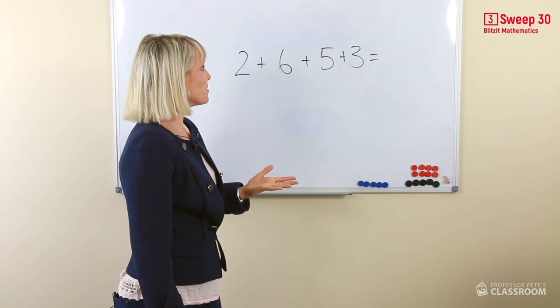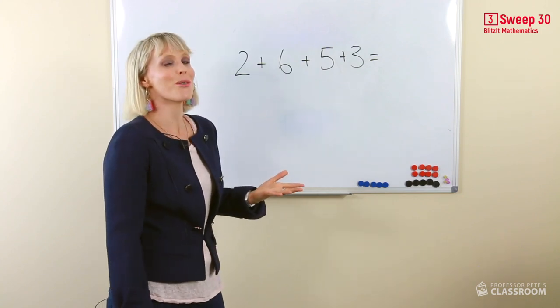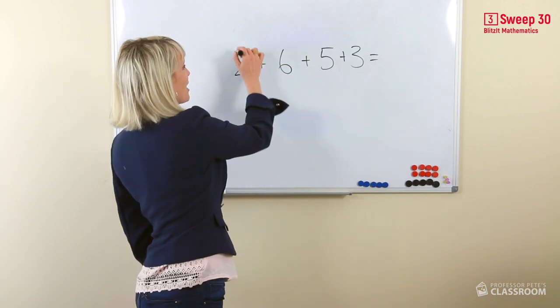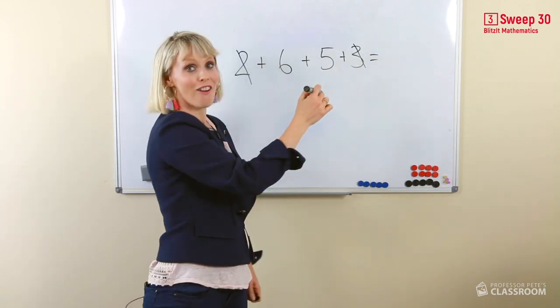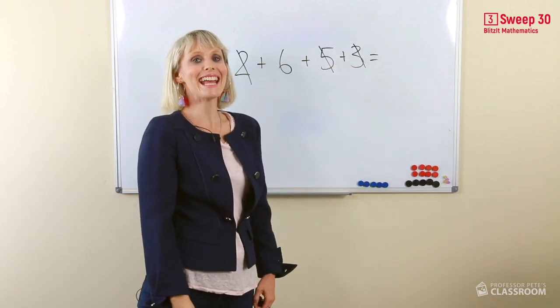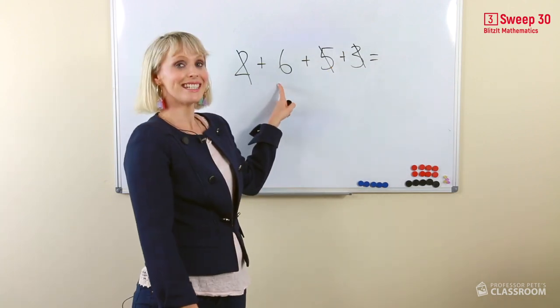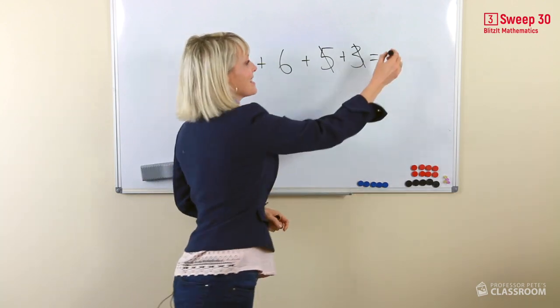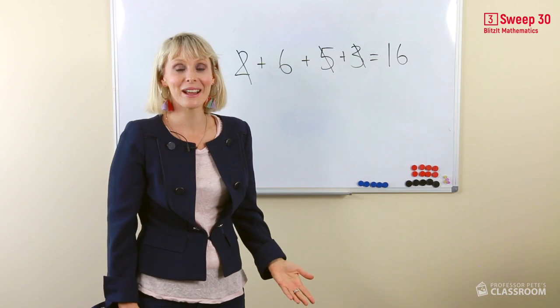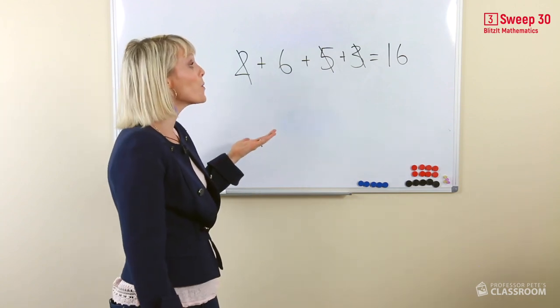Oh, but I can see 3 numbers added together that equals a 10. We know that 2 and 3 is 5. 5 and 5 equals 10. 10 and 6 equals 16. So our answer is 16. We did that so quickly.